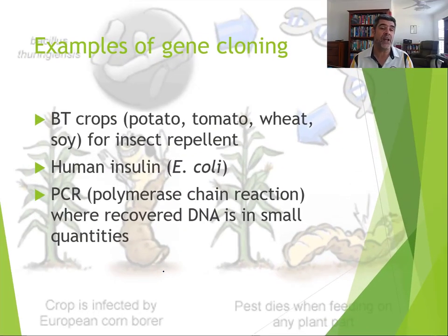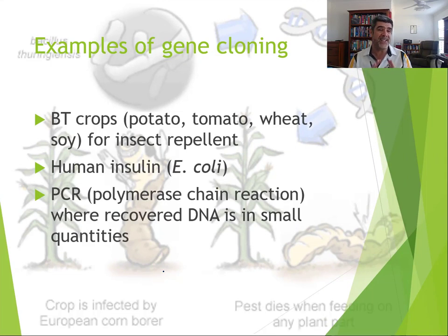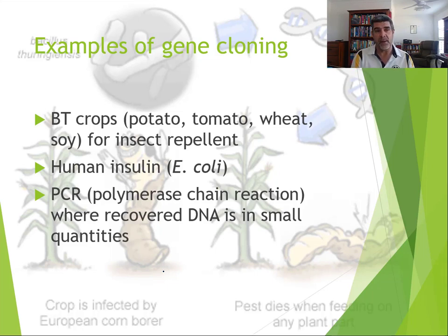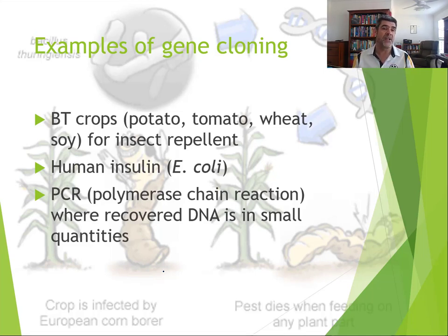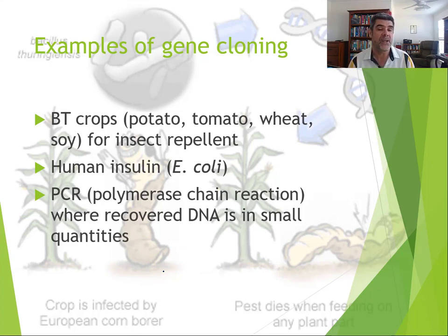What are some examples of gene cloning? Bacillus thuringiensis is one example where a particular gene in a bacterium produces a chemical that is toxic to insects. We've been able to introduce that gene into a number of plant crops to confer insect resistance. These are called Bt crops — Bt coming from the name of the bacterium. Potatoes, tomatoes, wheat, and soy are among the important crops that have been genetically modified through gene cloning.